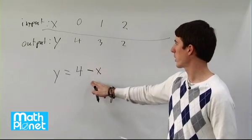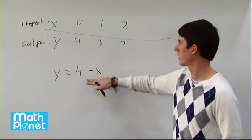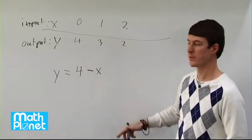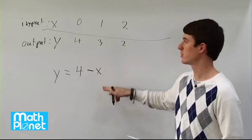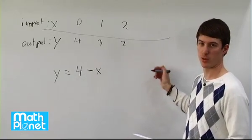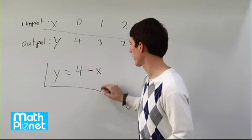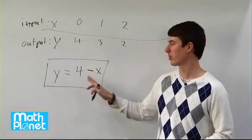So if we plug in 0 here, we get 4. If we plug in 1 here, we get 4 minus 1 is 3. If we plug in 2 here, we get 4 minus 2 is 2, etc., and that holds for the whole table. So here's our formula right here with our output variable and our input variable.